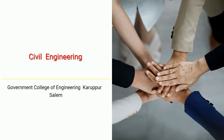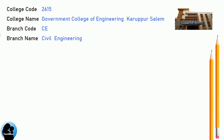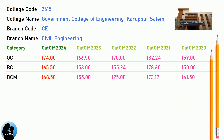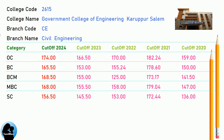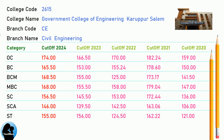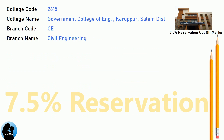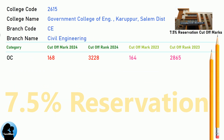DNA Cut-off for Government College of Engineering, Karupur, Salem in Civil Engineering. DNA 7.5 Reservation Cut-off for Government College of Engineering, Karupur, Salem District in Civil Engineering.